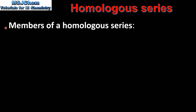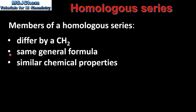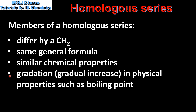So let's end with a summary. The members of a homologous series differ by a CH₂, they have the same general formula, they have similar chemical properties, and they have a gradation or gradual increase in physical properties such as boiling point.